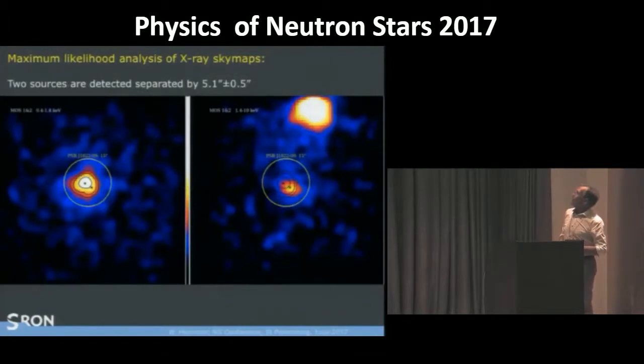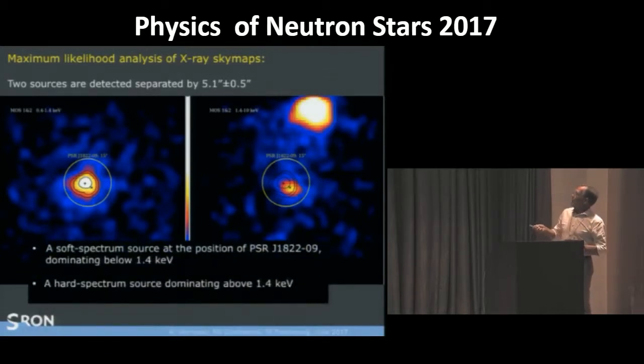And indeed we detected the source very neatly. But we did see a double source. For the low energies, below 1.4 keV, the pulsar is dominating. Above 1.4 keV, there is a nearby source at five arc seconds. So you can only analyze this properly when you use maximum likelihood. And that works nicely.